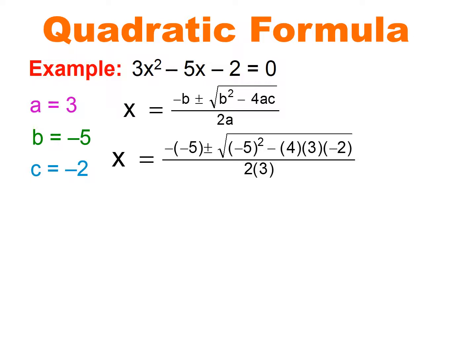Now that I have a, b, and c, I substitute everything into the formula and evaluate. Be careful here because with negative b, when I put in that negative 5 we have a double negative, so it's very important that you use parentheses to plug everything in. That negative negative will change to a positive 5 plus or minus. A negative 5 squared is a positive 25, then negative 4 times 3 is negative 12, and negative 12 times negative 2 gives me positive 24. And 2 times 3 is 6, so it's all over 6.